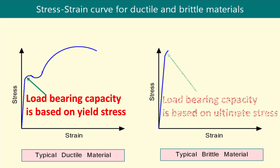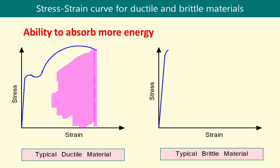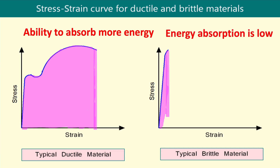But when we use brittle materials for an application, its load-carrying capacity will be calculated based on its ultimate stress. The area under the stress strain curve represents its strain energy absorption capacity. It is evident that ductile materials always absorb a high amount of energy, whereas for a brittle material, energy storage is comparatively low.